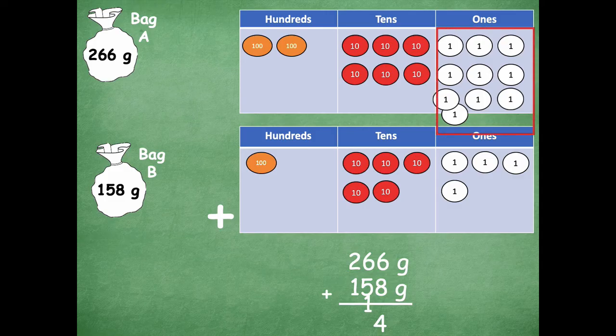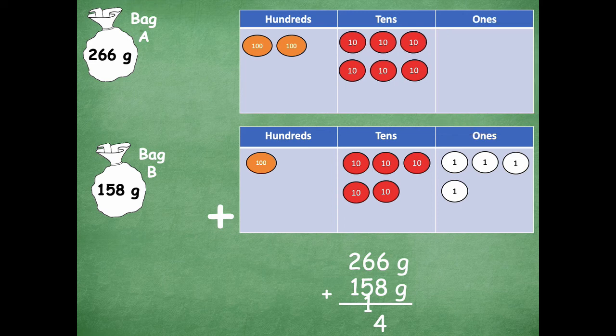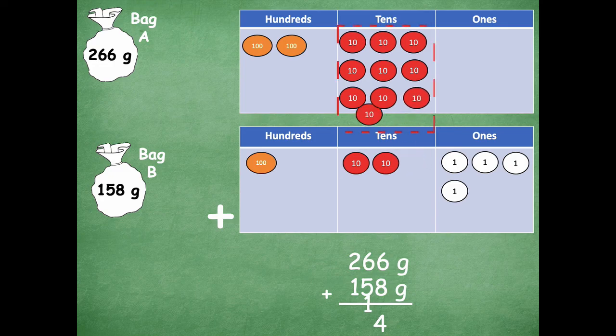So I can trade all those in for a 10. So now we're going to go over to our tens place. And we can go ahead and make a 10 using those because we know that 10 tens make 100. I'm going to have more than 10 for this one. So I have six, seven, eight, nine, 10.